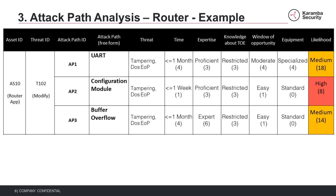In the third step, we analyze the likelihood of each threat. In order to compute the score of each threat, we analyze it based on several parameters. There are a few factors to consider, and experienced cybersecurity professionals will know how to rank them: how long it will take to exploit the threat, how experienced a hacker needs to be, and whether specific equipment or a time opportunity is required. We factor all these parameters into a final score.